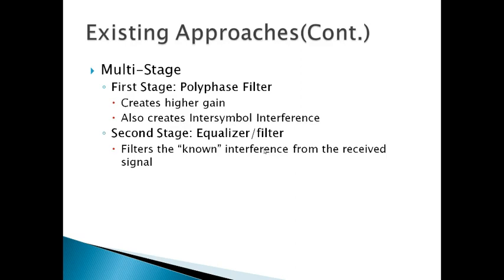The second stage is this equalizer filter that filters the known interference that we created, the inter-symbol interference we created from the received signal. So the first stage eliminates the fading but creates new interference, and the second stage filters out this known interference that we created.